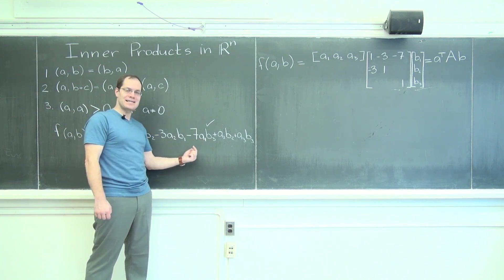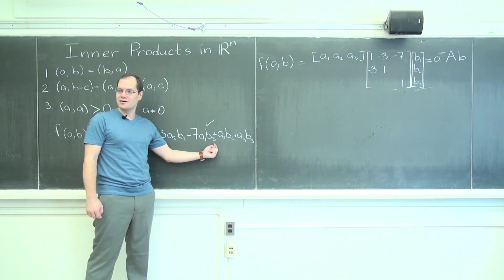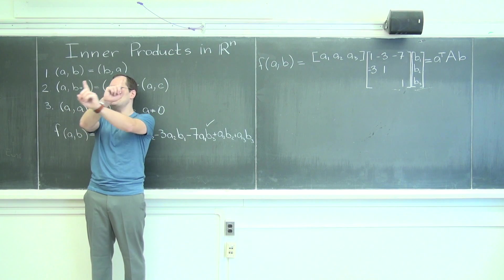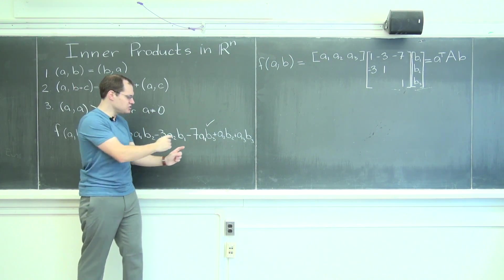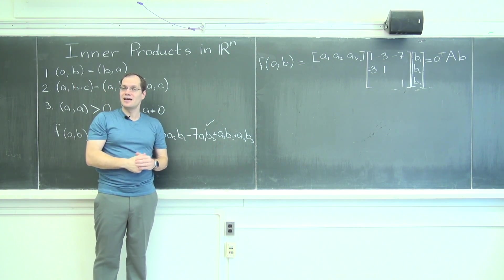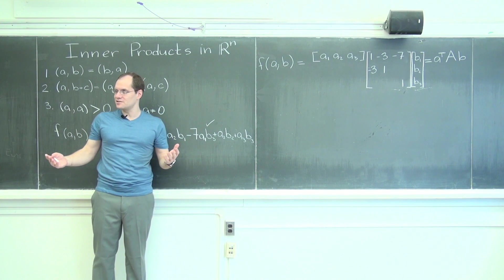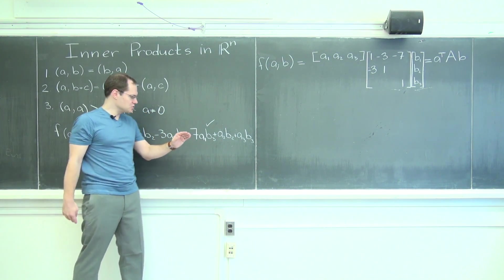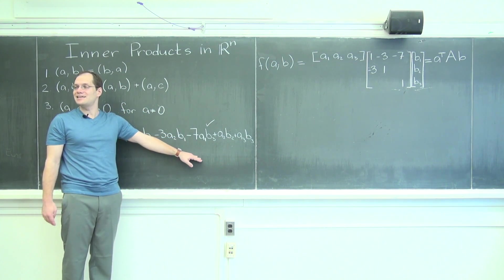Had we had minus seven A3B1, then when A and B trade places, then these two terms will trade values and the result will be the same because they're in a straight sum. Because we lack commutativity, this is not an inner product.